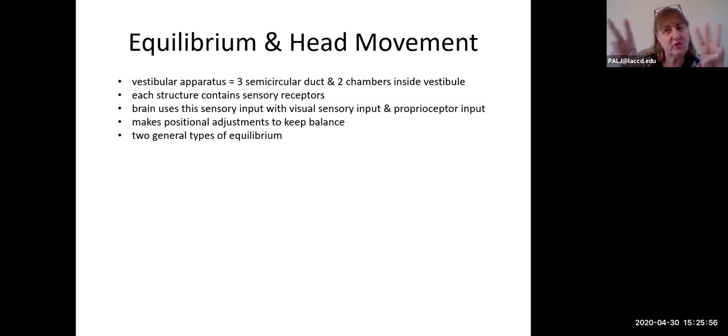Each one of these structures has an area that contains sensory receptors, and of course the names are different for everything. The brain is going to be using all the input we get from all those sensors and it is going to try to pair it up with what we're getting from our sense of vision to see if it can make sense with it. It's also going to bring in input from your proprioceptors as well, and your body will automatically be making positional adjustments trying to keep you in balance all day long.